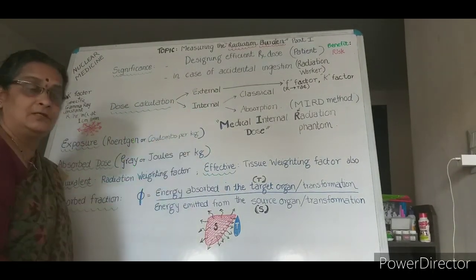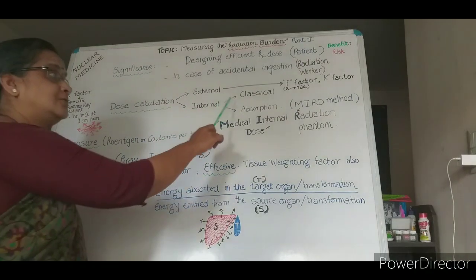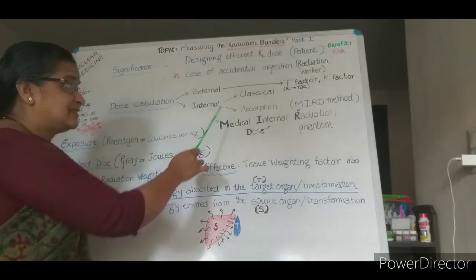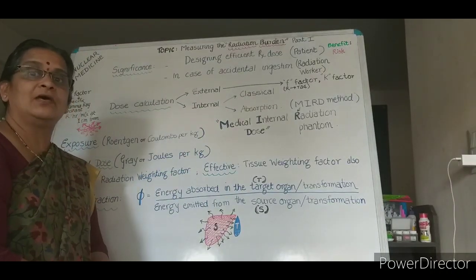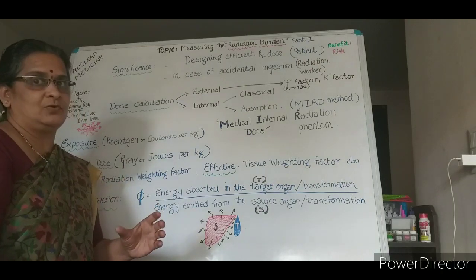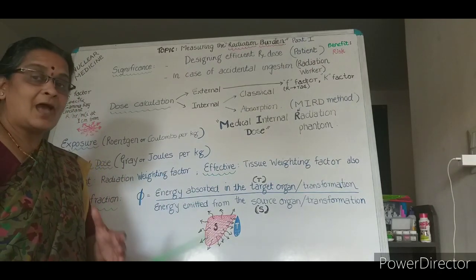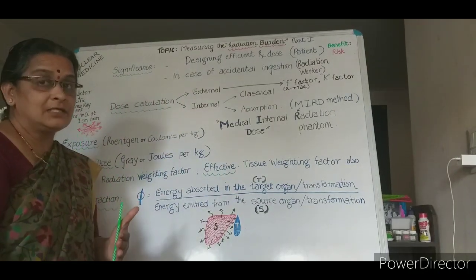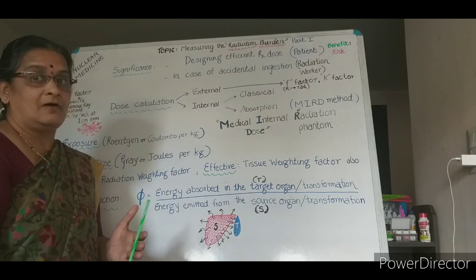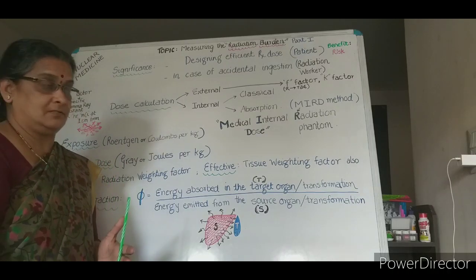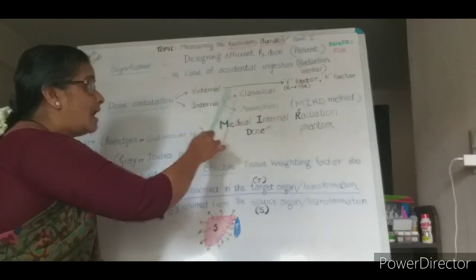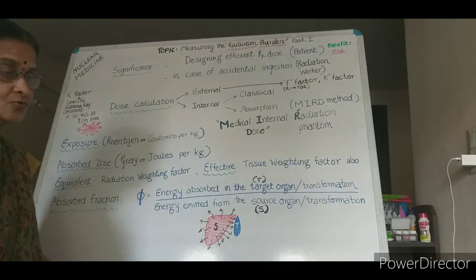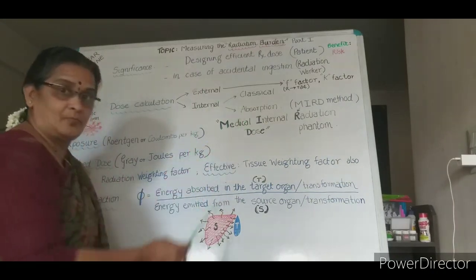As for the internal dose calculations, there are two types: classical and absorption type. Classical method is the previous type where separate calculations were done for beta and gamma radiations. Gamma radiations are important in case of external exposure, while for internal exposure, alpha and beta are very much of concern. Now we have to go for the most important topic we are talking about today, and that is about the internal absorption method using MIRD method.